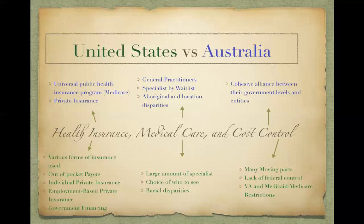This is all in opposition to Australia, where they have a universal public health insurance program they call Medicare that is financed through the general tax revenue and a government levy. It's managed with the cooperation of federal, state, and local government. All citizens, permanent residents, and certain visa holders are eligible to receive care.